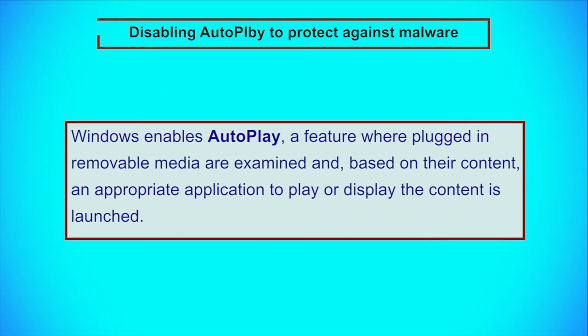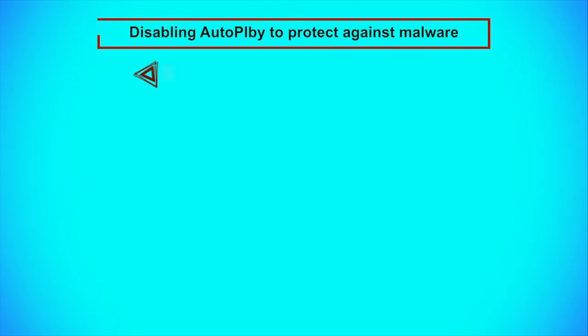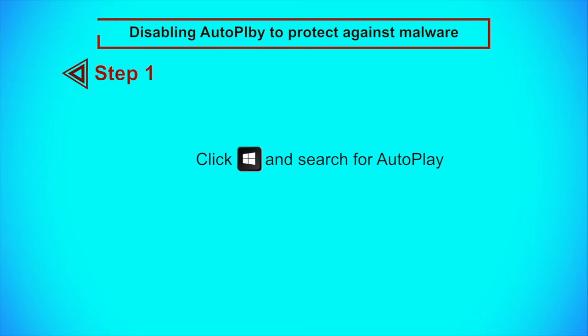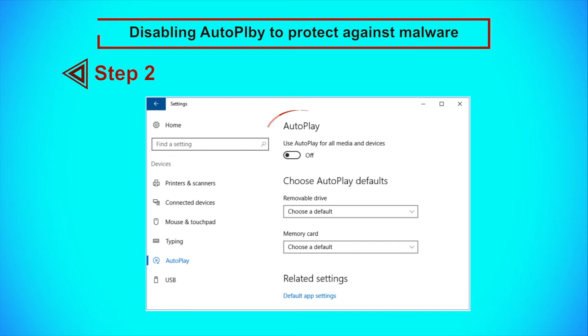Now let us discuss how to disable Autoplay to protect against malware. By default, Windows enables Autoplay — a feature where plugged-in removable media like USB drives or devices are examined and, based on their contents such as pictures, music or video files, an appropriate application to play or display the content is launched. Step 1: Click the Start button and search for Autoplay. Step 2: Turn off Use Autoplay for All Media and Devices.